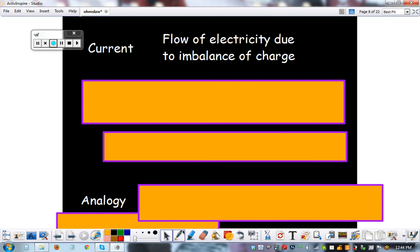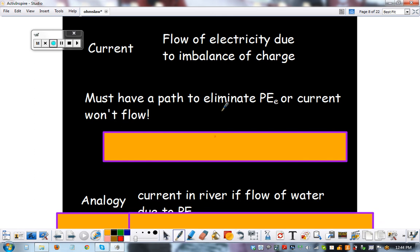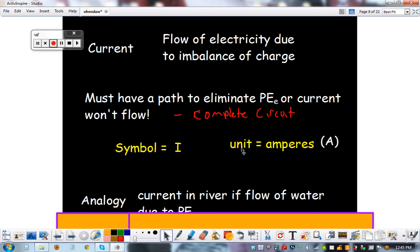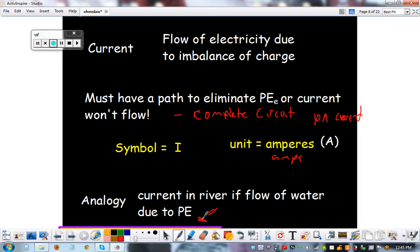Current is a flow of electricity due to imbalance of charge. You must have a path, though, to eliminate the current. You must have a complete circuit. The formula symbol is I. And the unit is amperes or amps. The symbol is A. So you might have a 10-amp current. And the analogy is current is a flow of water in a river due to potential energy, right? That's why rivers flow, because they're flowing downhill. So in current, it's a flow due to potential energy electric and charge.